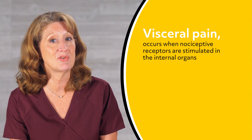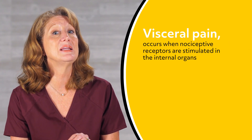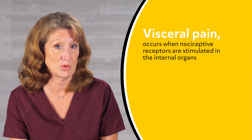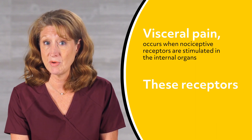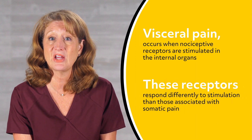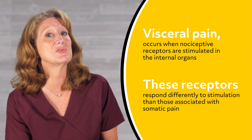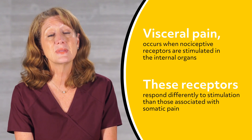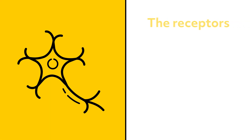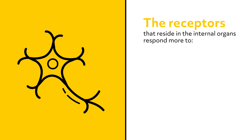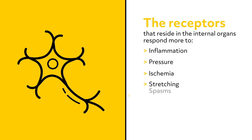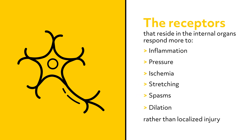Visceral pain, the focus of this video, occurs when nociceptive receptors are stimulated in the internal organs. These receptors, however, respond differently to stimulation than those associated with somatic pain. The receptors that reside in the internal organs respond more to inflammation, pressure, ischemia, stretching, spasms, and dilation rather than localized injury.